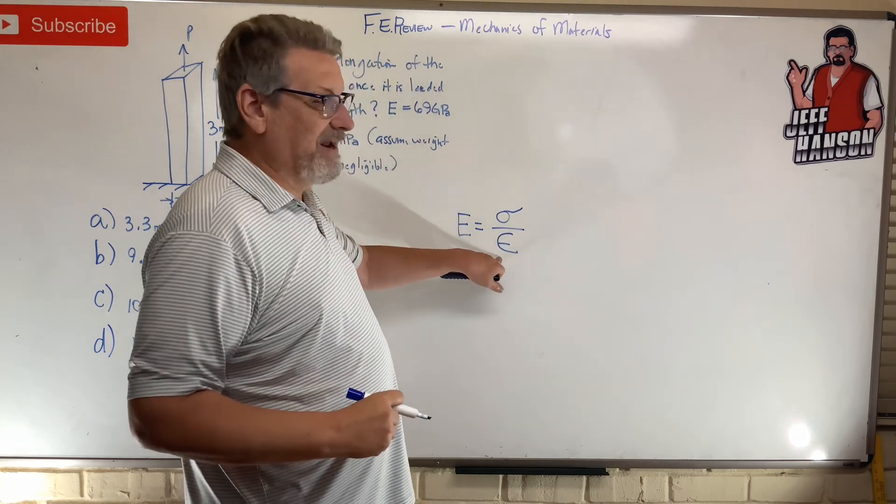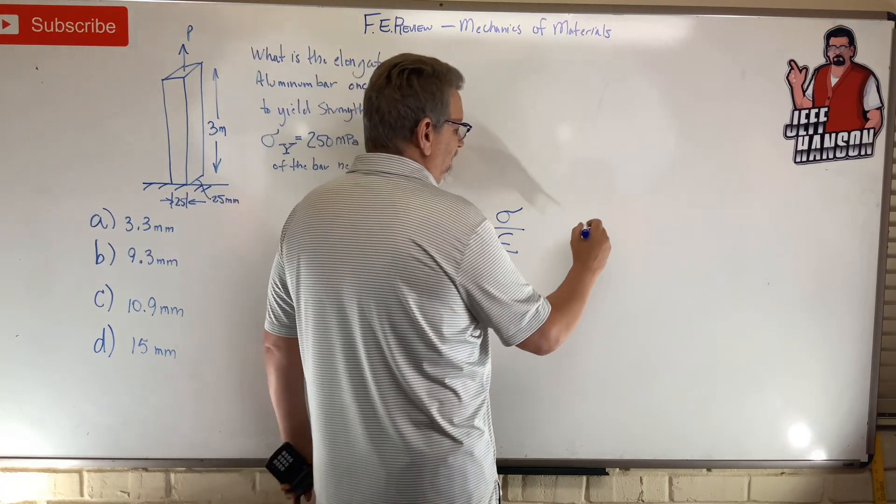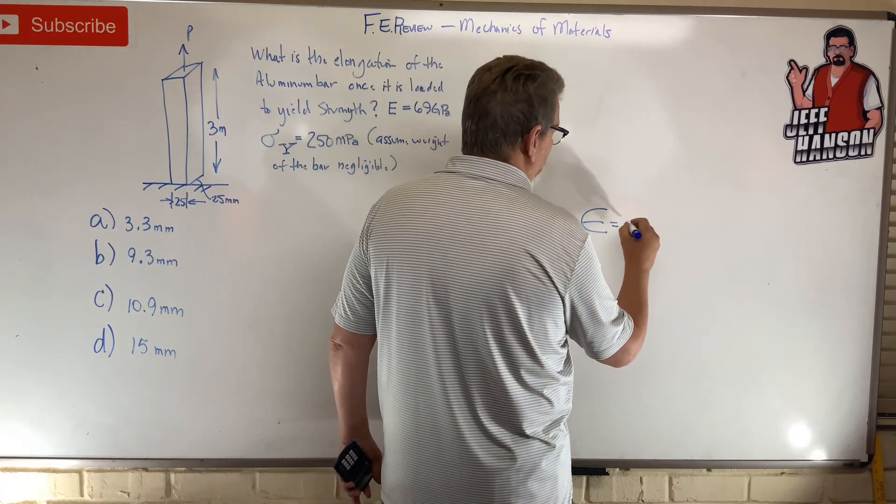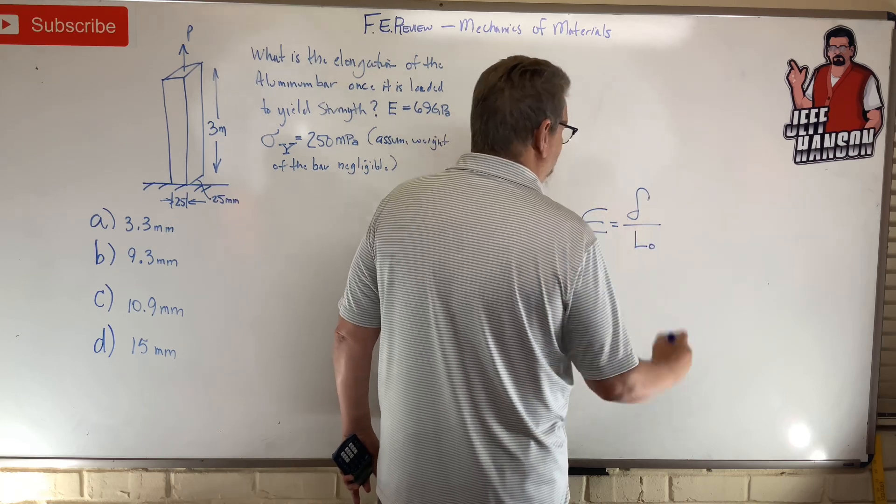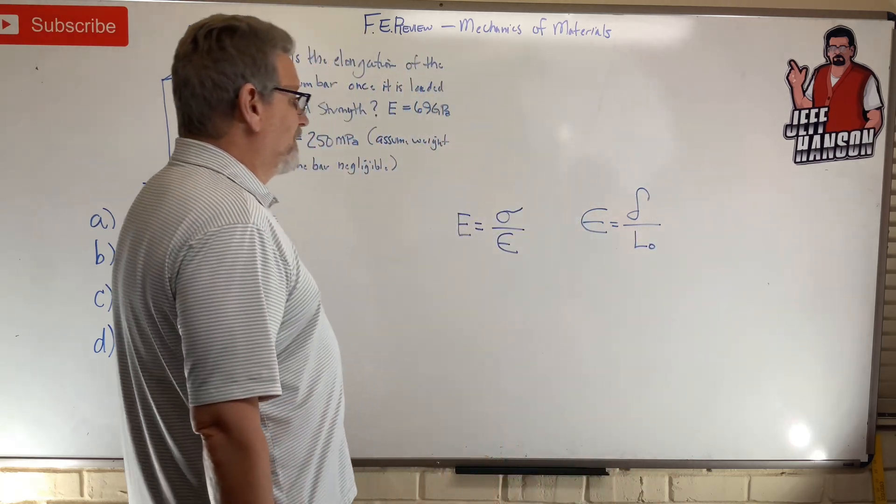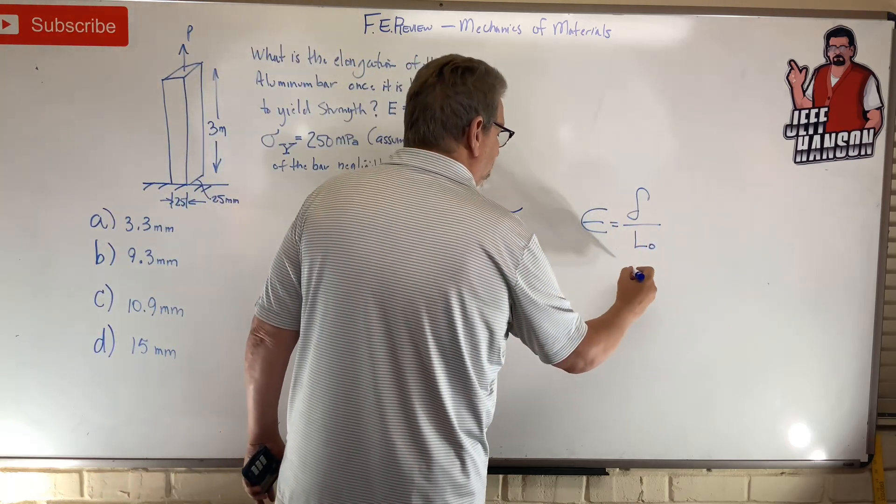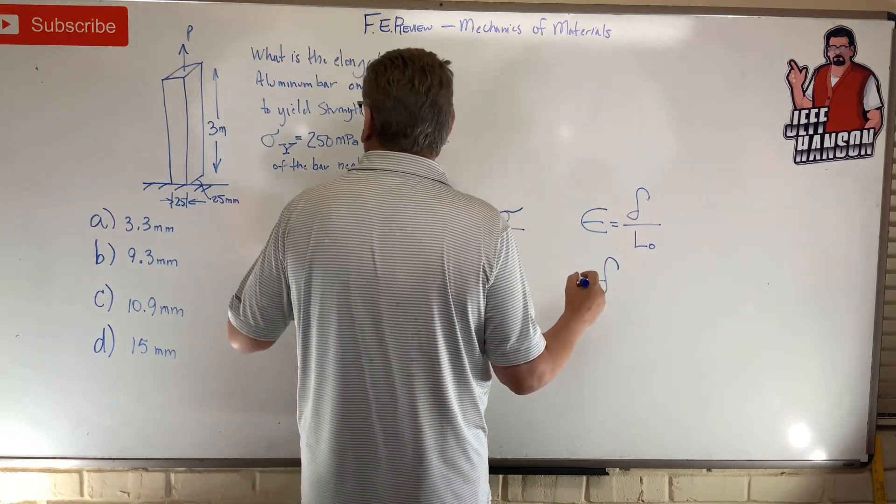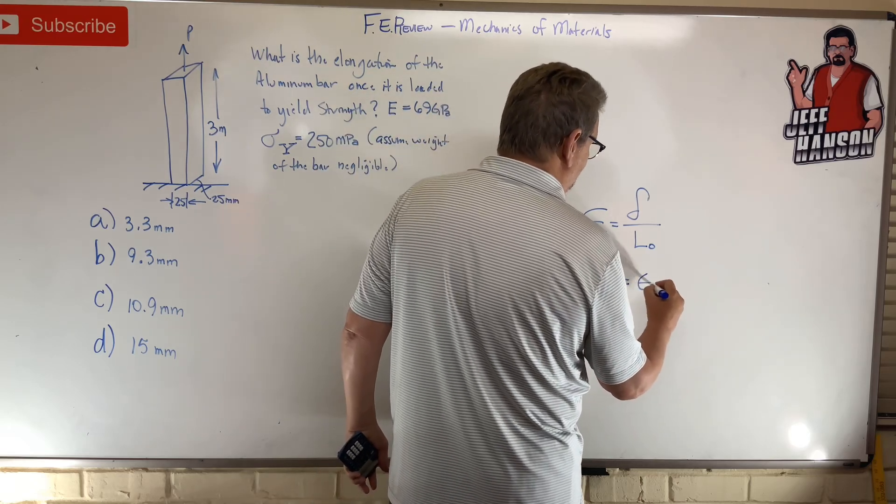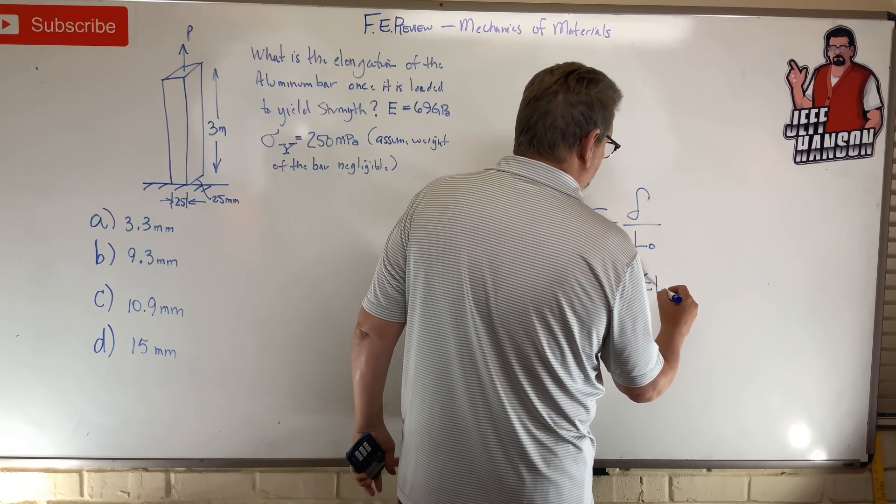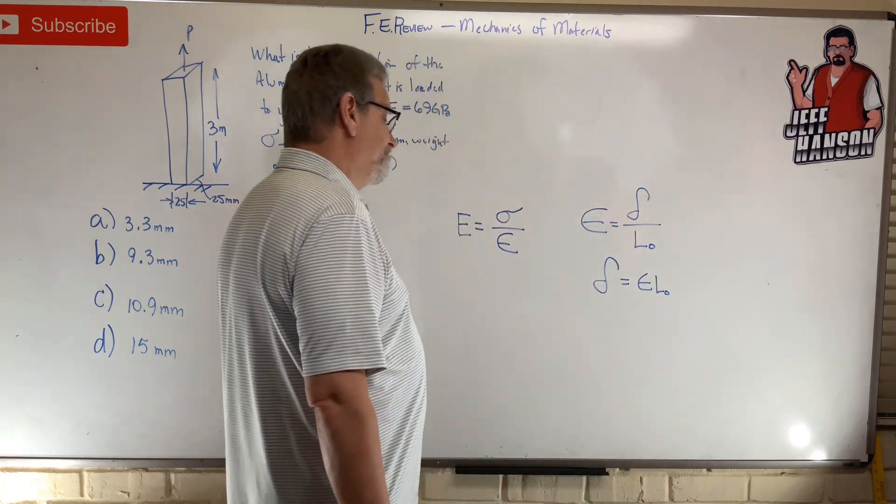This is strain. And what is strain? Strain is equal to the change in length divided by the original length, right? So if I want delta, which is the change in length, what it's asking me for, what is the elongation, it would just be strain times the original length. And I have the original length, it's three meters.